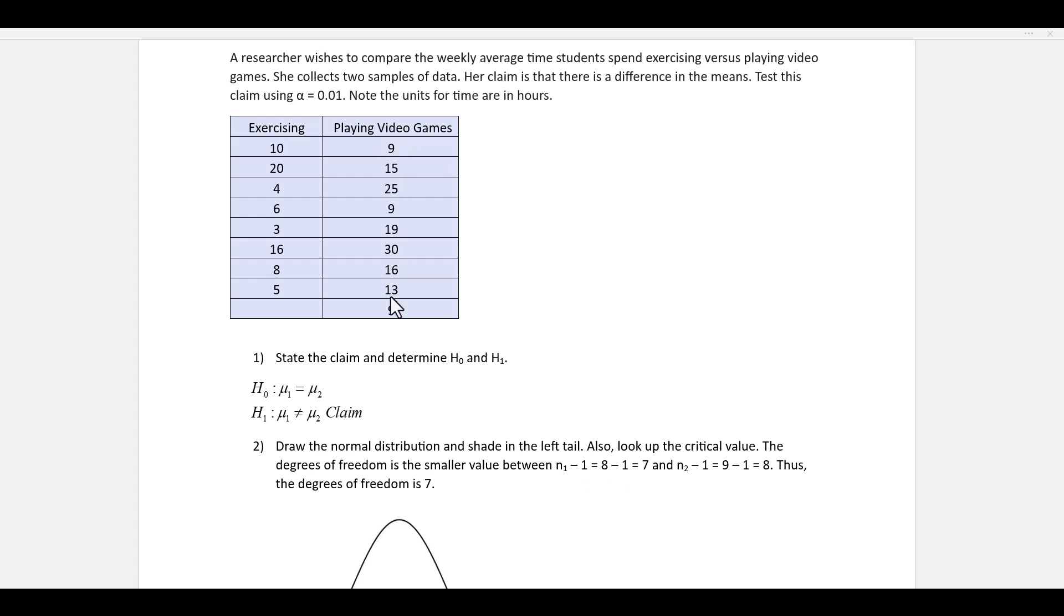We have 9 data values for the second sample, 9 minus 1 is 8. We pick the smaller of the two to be the degrees of freedom. Thus, degrees of freedom is 7.